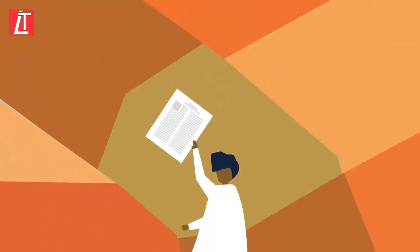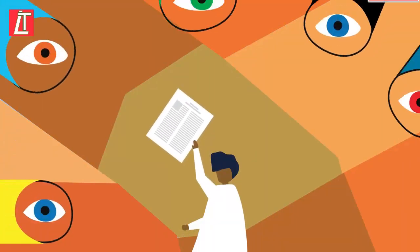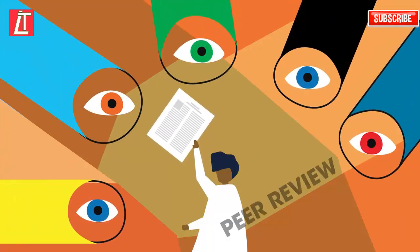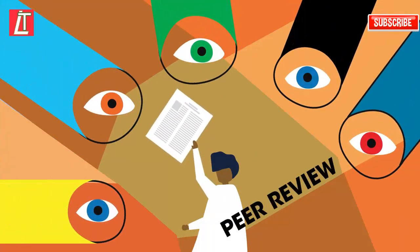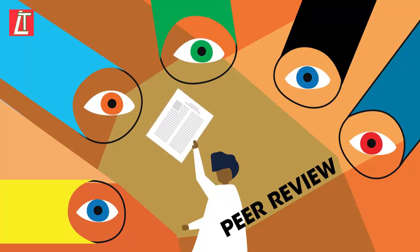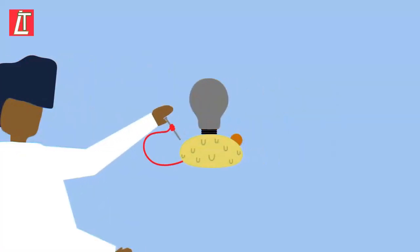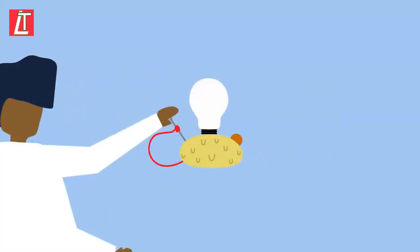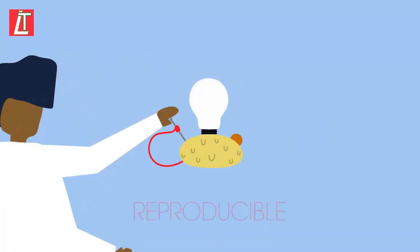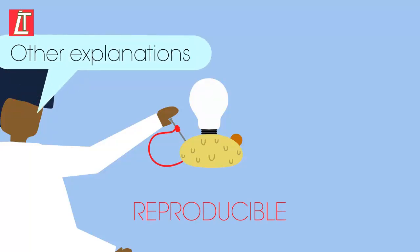When the paper is published, it is then reviewed by other scientists in a process called peer review. This can be an anonymous process. Sometimes other scientists repeat the experiments to ensure the data is reproducible, and sometimes other explanations for findings are suggested.